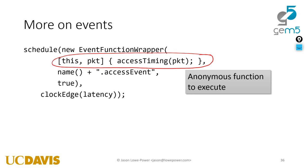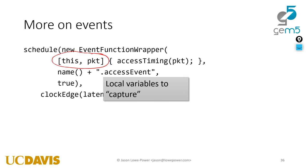I want to talk about the event function wrapper again. It's really useful to use these anonymous lambda functions to schedule some function to execute later — specifically, we are capturing 'this' and 'packet' so we can use the current object and other local variables when we call this. Previously, before the event function wrapper was added last summer, you would have to create a class for every single event you wanted, but now it's much easier.